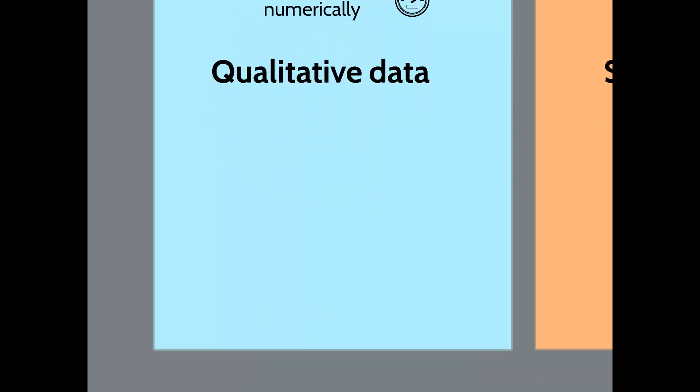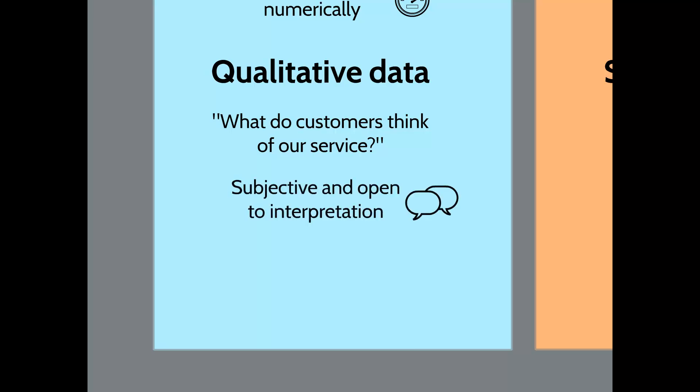Qualitative data is not measured numerically and is more open to interpretation. A question an organisation might ask to find qualitative data would be: what do the customers think about our service? This can't be measured numerically — you could try by giving it a score out of 10, but it's still open to interpretation. It's also open to the attitudes of individuals at the time they respond. If someone is having a bad day and gives a poor score, that's not a true reflection of service quality, and what some people find to be bad service others may think is just okay. As a result, qualitative data can often be quite a lot less reliable.